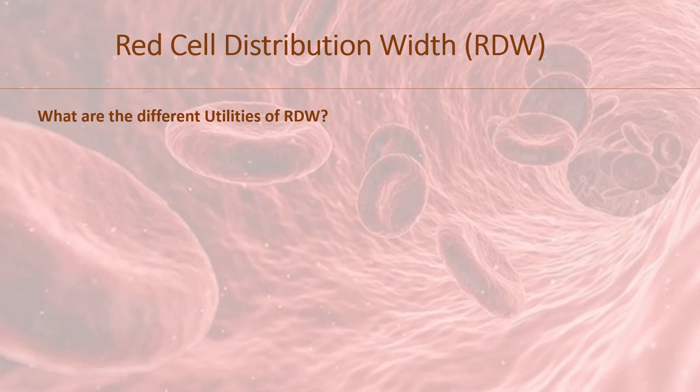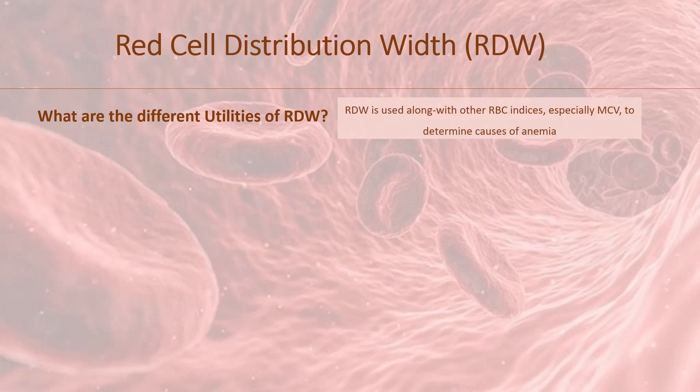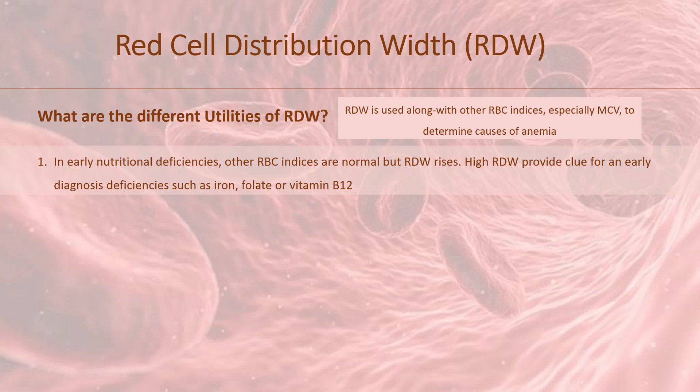What are the different utilities of RDW? RDW is used along with other red blood cell indices, especially MCV, to help determine the causes of anemia. RDW helps in early detection of nutritional deficiencies such as iron, folate, or vitamin B12. This is because other red cell indices — MCV, MCH, etc. — are normal in early nutritional deficiencies, while RDW becomes elevated. Therefore, a high RDW provides a clue for an early diagnosis of these deficiencies.